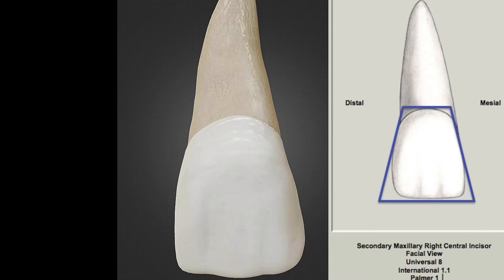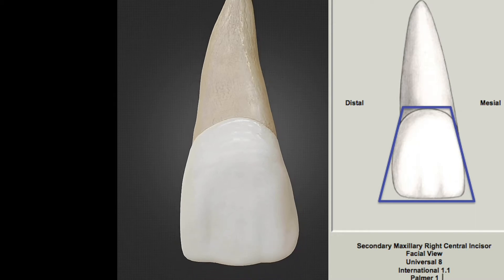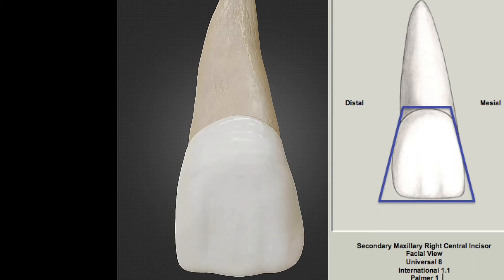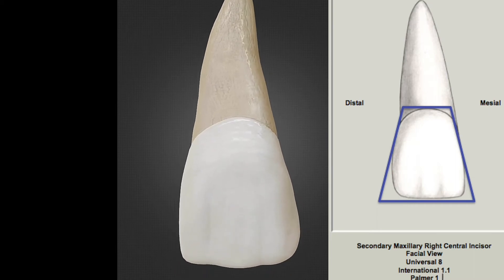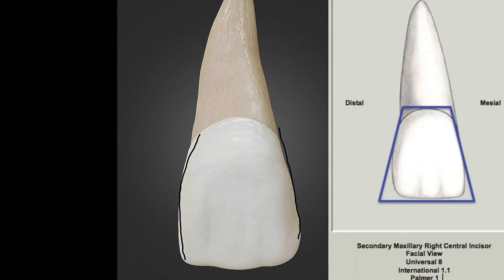The mesial outline is more straight and slightly convex, while the distal outline is more convex than the mesial outline.